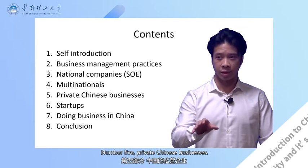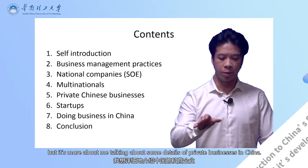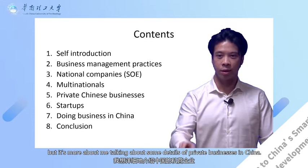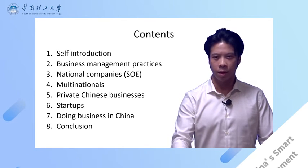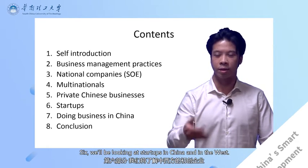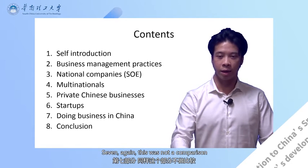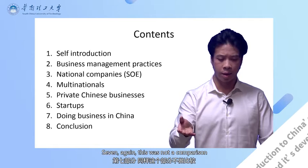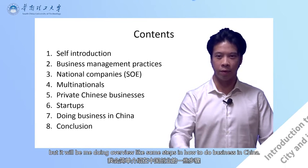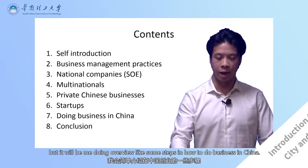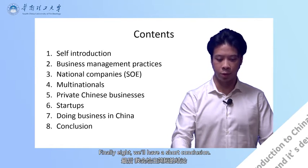Number five is private Chinese businesses — this is more about me talking about some details of private businesses in China. Six, we will be looking at start-ups in China and in the West. And seven, this one is not a comparison but will be me doing an overview of some steps in how to do business in China. And finally, eight, we will have a short conclusion.